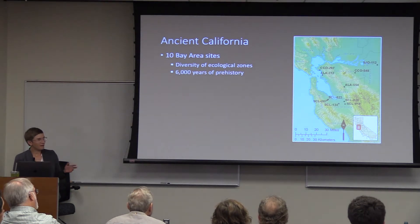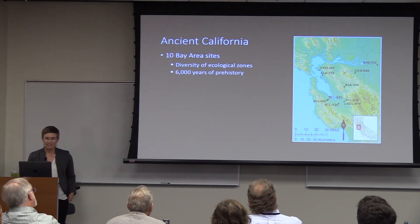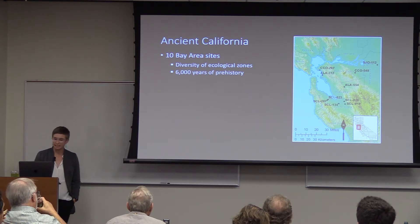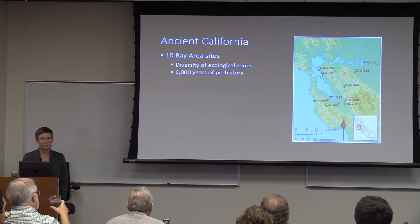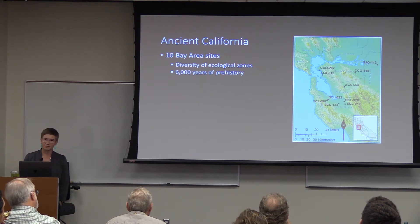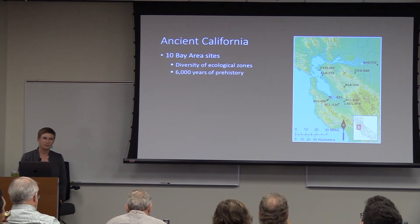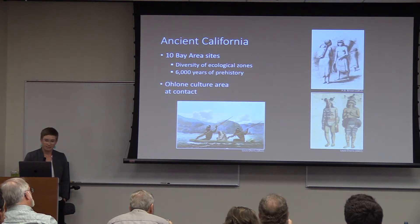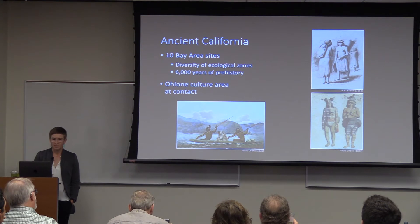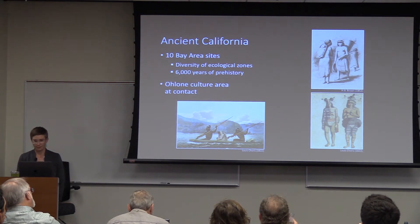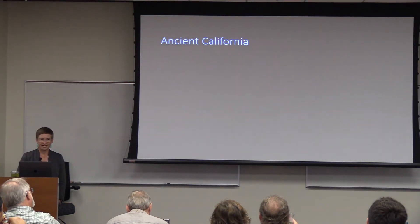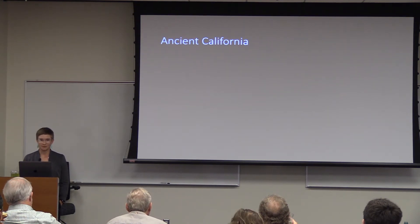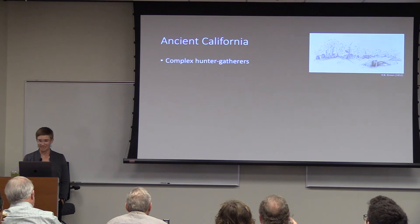I want to introduce our first study population: ancient California. I have 120 individuals from 10 Bay Area sites across a diversity of ecological zones spanning 6,000 years of prehistory — from about 7,000 years ago to right before contact with the Spanish. At contact with the Spanish, this was the Ohlone culture area. Ancient California is a fascinating place, and I unfortunately can't spend a whole hour on it, so I'll give a quick rundown.